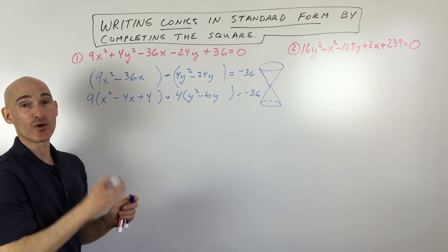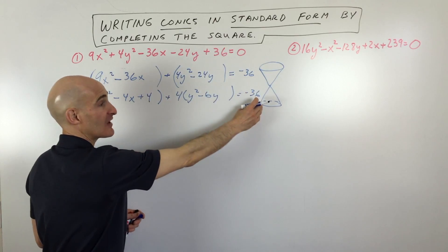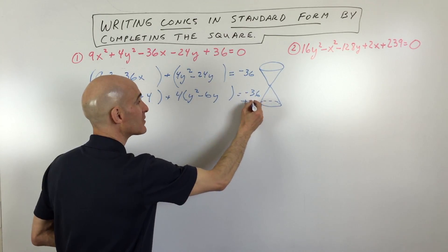Now what I want you to recognize is that because it's in parentheses, it's actually 9 times 4 that I added out of thin air. So I added 36 to the left side of this equation, I have to add 36 to the right side to keep it balanced. So let me just do that right here plus 36.